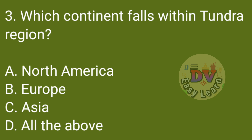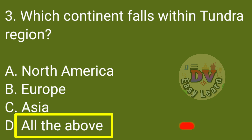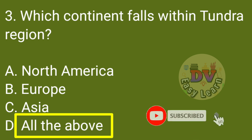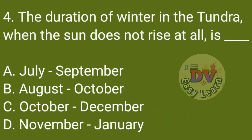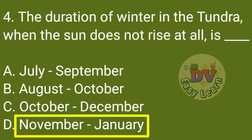Q3: Which continent falls within the Tundra region? Correct answer: All of the above — North America, Europe, and Asia. Q4: The duration of winter in the Tundra when the sun does not rise at all is? Correct answer: November to January.